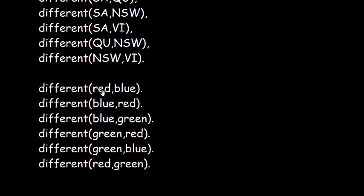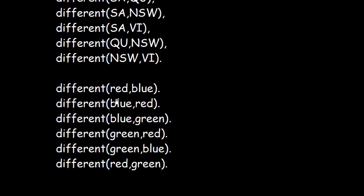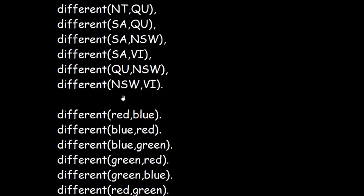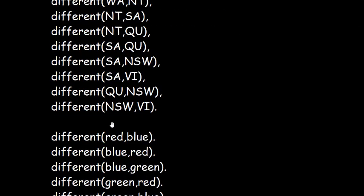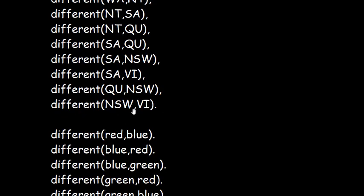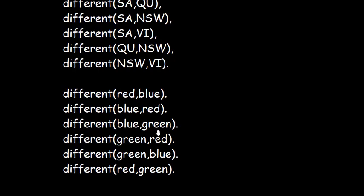We then define three colors — red, blue, and green — so that colors can be assigned to the states. We define: red is different from blue, blue is different from red, blue is different from green, and green is different from red. This ensures three distinct colors are available for assignment, satisfying the constraint that no two adjacent states share the same color.